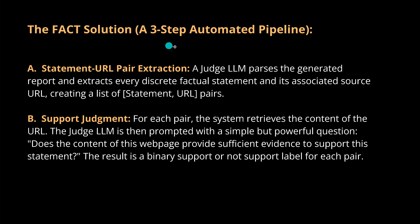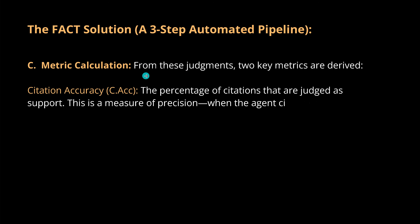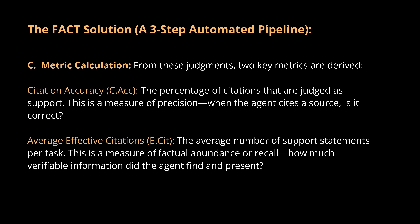FACT uses another three-step automated pipeline: you have a pair of statements and URLs, then a support judgment of the pairs, then a metric calculation. This gives citation accuracy — the percentage of citations judged as supported, measuring precision — and effective citation, the average number of supported statements per task, measuring how much verifiable information the agent found and presented to the user.